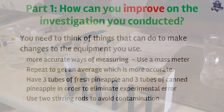Point 14 on page 7 asks how you can improve on the investigation. You can improve accuracy by using a mass meter to measure. You can repeat the experiment more than once to get an average. You can also increase the number of test tubes — instead of one test tube for fresh or canned pineapple, use three test tubes of each, which gives you an average measurement.